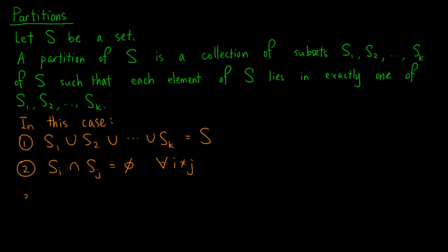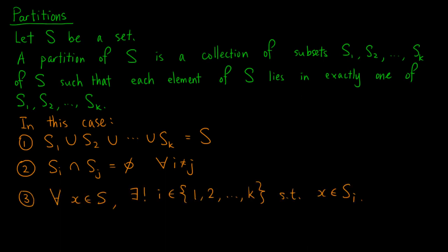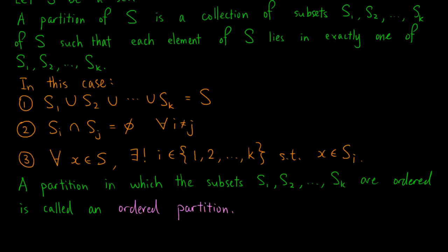Third, for all elements x in S, there exists a unique i in the set from 1 to K such that x lies in the set Si. This is just the definition of a partition written in mathematical language.